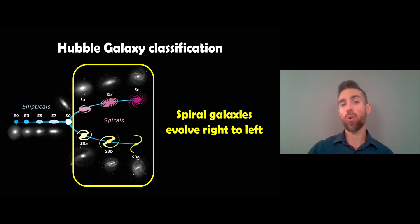On the Hubble galaxy classification it looks a bit like a tuning fork, and on the right hand side you have your spirals. The top part is your normal spirals and the bottom half is your barred spirals, a bit like the Milky Way which is a barred spiral galaxy.